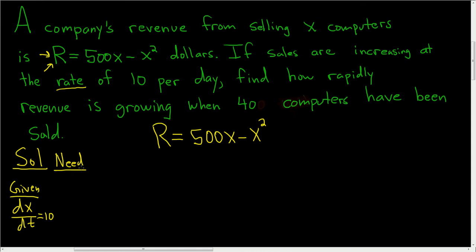Then we need how fast is revenue growing, so the rate of change of revenue with respect to time. And we want that when X is 40, when 40 computers have been sold. So we need dR/dt when X is 40.